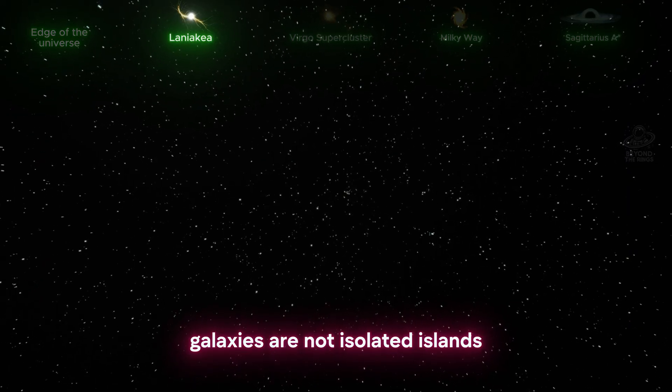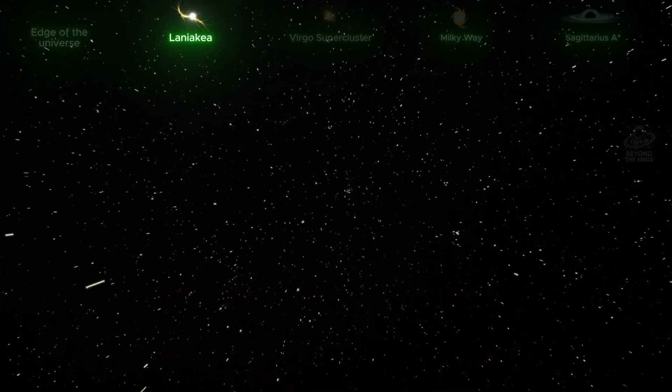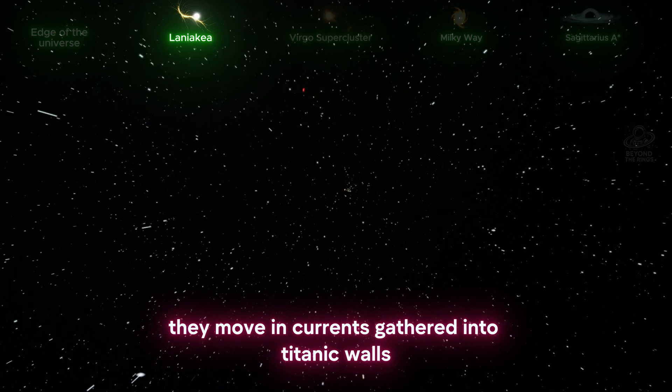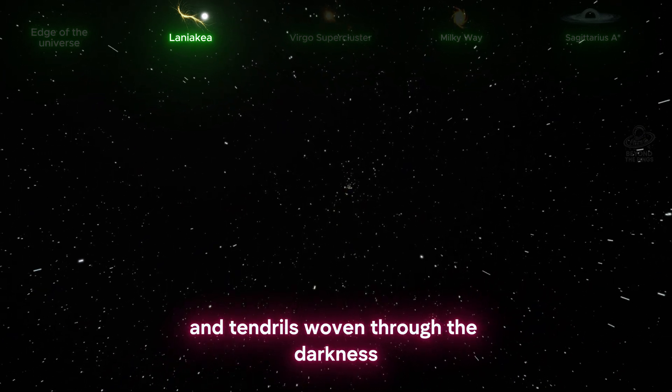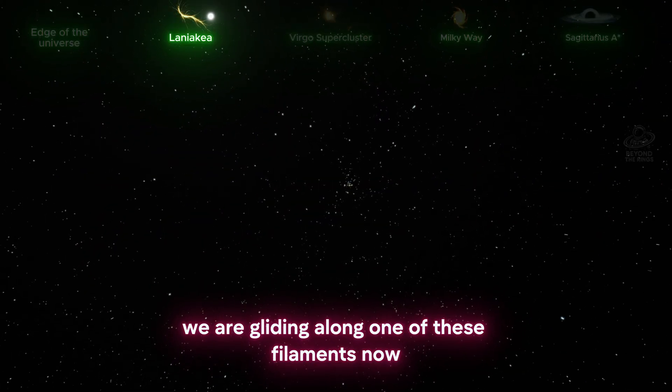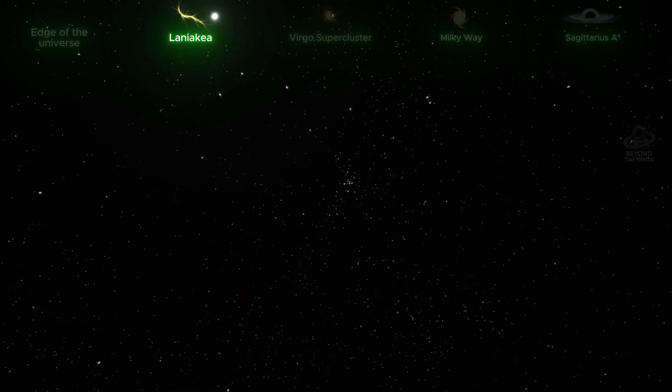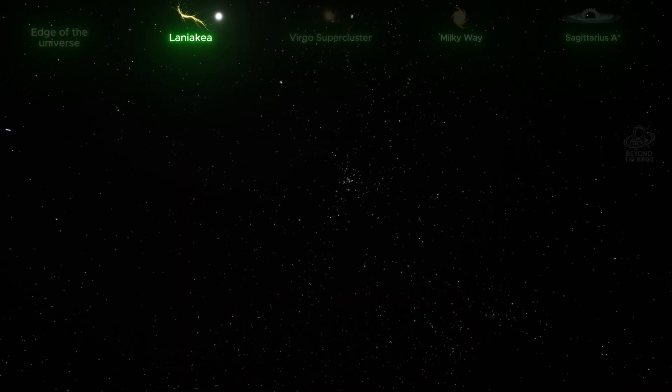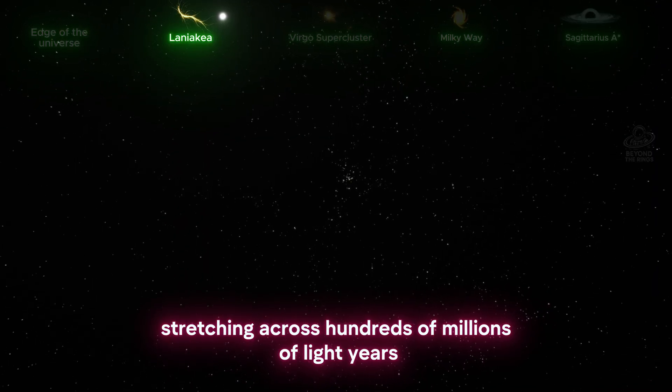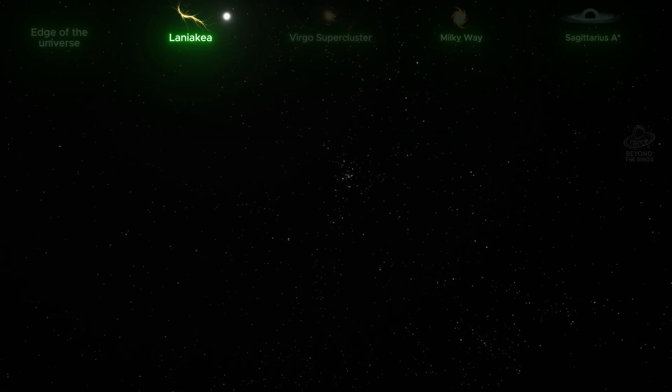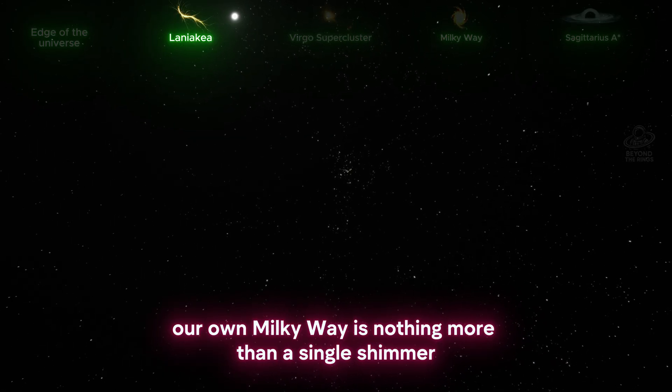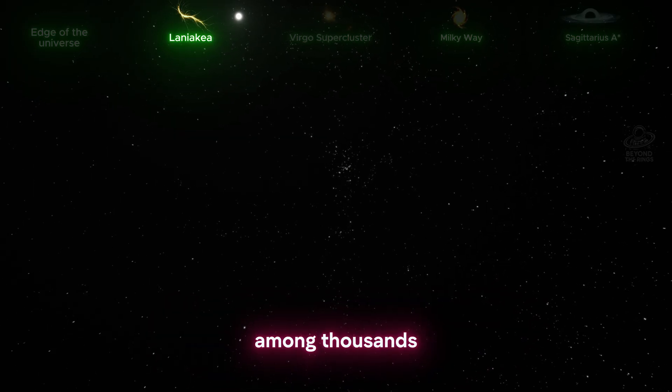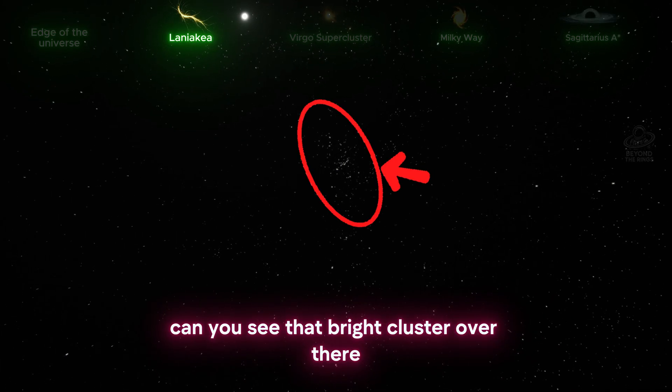Out here, the universe reveals its deepest truth. Galaxies are not isolated islands, they move in currents, gathered into titanic walls and tendrils woven through the darkness. We are gliding along one of these filaments now, a highway of galaxies stretching across hundreds of millions of light years. From here, our own Milky Way is nothing more than a single shimmer among thousands. Can you see that bright cluster over there?